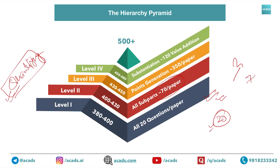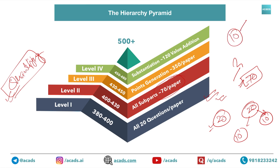How did we arrive at the figure of 70 subparts? In an average GS paper, excluding GS4, there are 20 questions — 10 ten-markers and 10 fifteen-markers. In 10-markers, two subparts are direct, and including the intro or way forward as a conclusion it becomes three subparts. In 15-markers there are four subparts. So total is 3×10 = 30 plus 4×10 = 40, giving 70 subparts. You need to attempt all 70 subparts per paper.